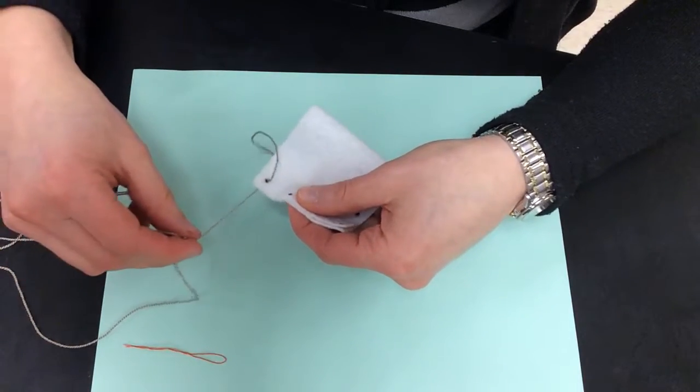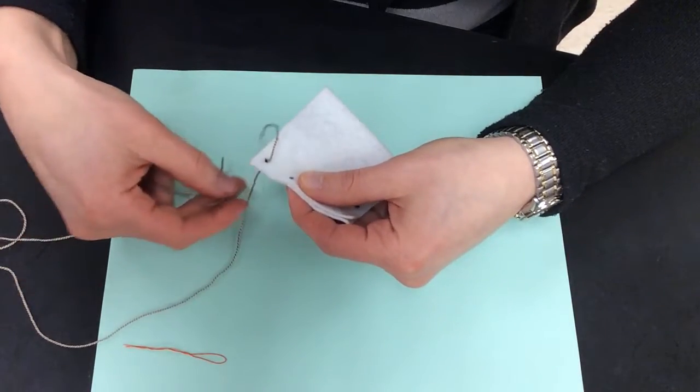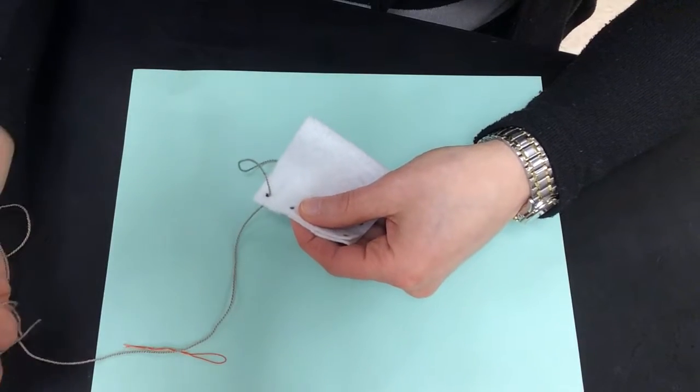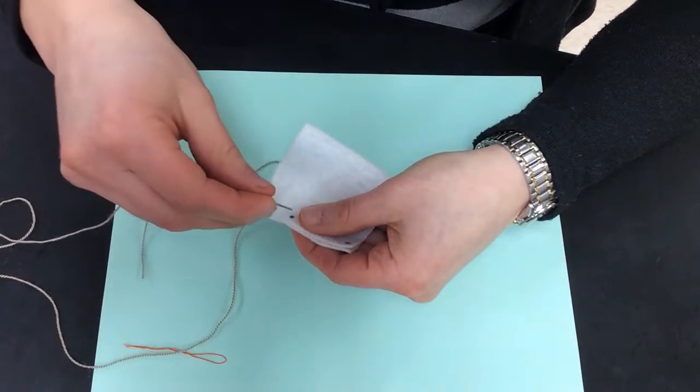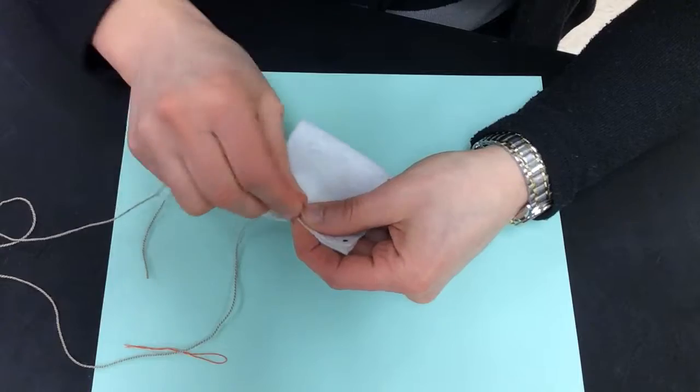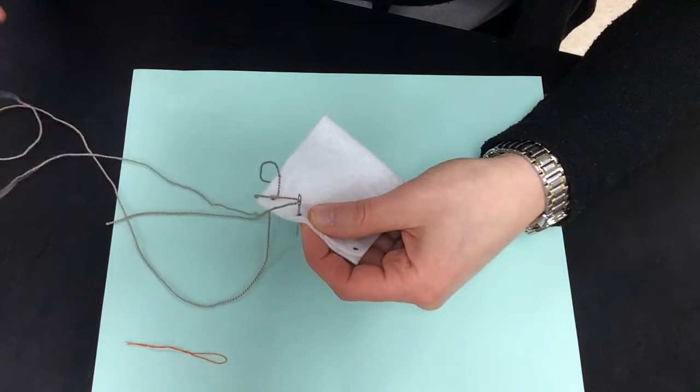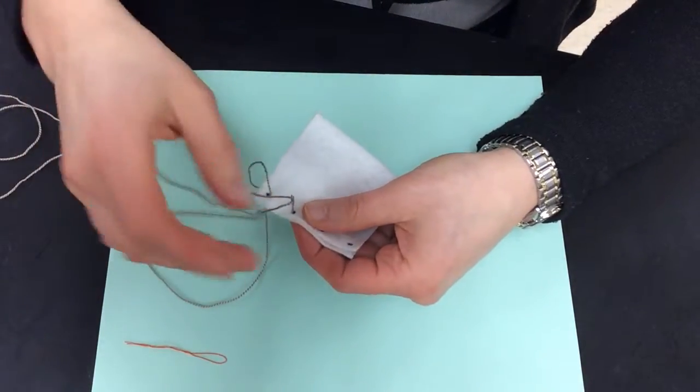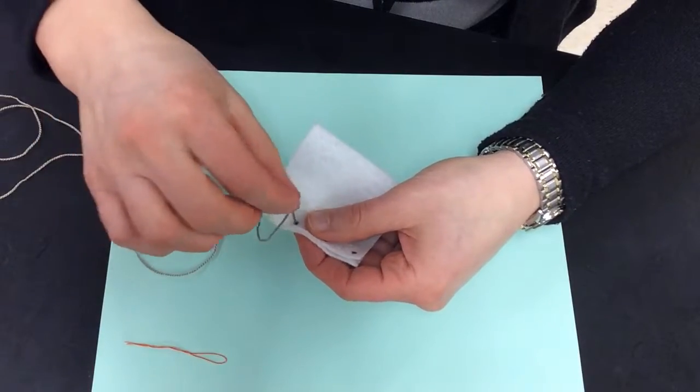So what you're going to do is you've gone through. You're going to take your needle, and you're going to bring it back through. You're going to keep your loop of thread on the other side of the needle, on the side that you've already sewn on.